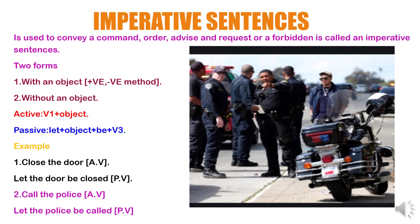There are two forms in imperative sentence: with an object and without an object. In the positive method with an object, since there is no subject in imperative sentences, always start with the verb. In active voice: V1 plus object. In passive voice: let plus object plus be plus V3. Example — in active voice: 'Close the door.' In passive voice: 'Let the door be closed.' First write 'let', then bring the object 'the door', then write 'be', then write 'closed' which is V3.